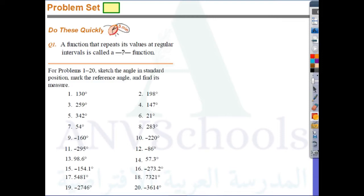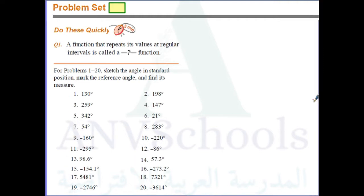Now we go to problem sets. These are five-minute timers. Question number one: a function that repeats its values at regular intervals is a blank. The answer is either periodic or sinusoidal function. That's the answer for question number one.